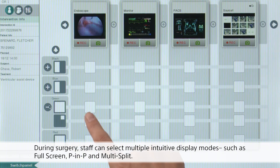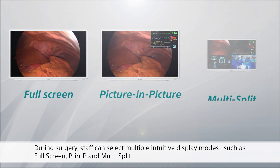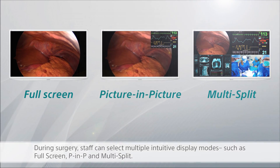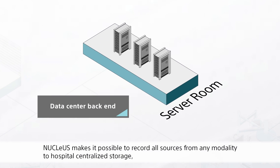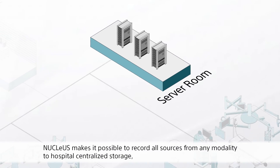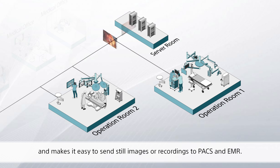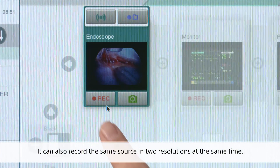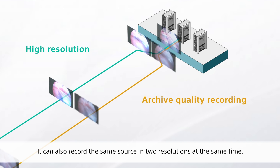During surgery, staff can select multiple intuitive display modes, such as full screen, PNP, and multi-split. Nucleus makes it possible to record all sources from any modality to hospital-centralized storage, and makes it easy to send still images or recordings to PACS and EMR. It can also record the same source in two resolutions at the same time.